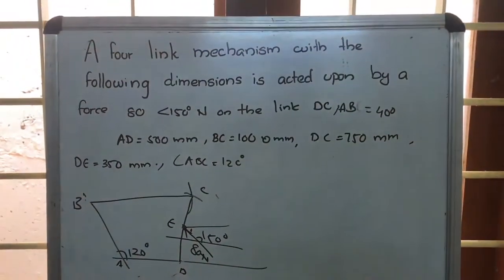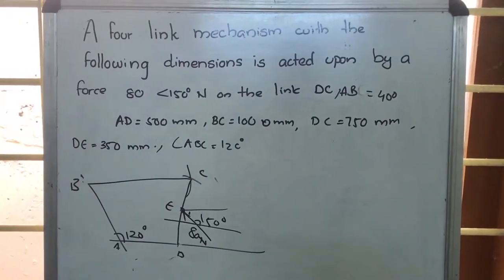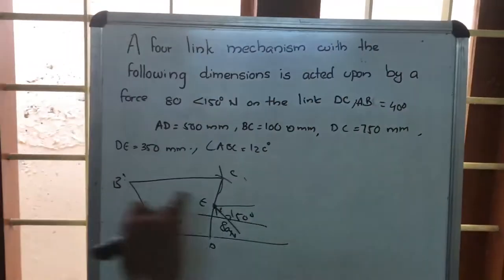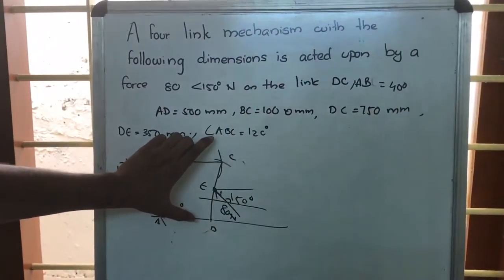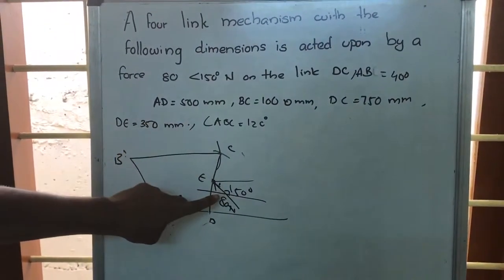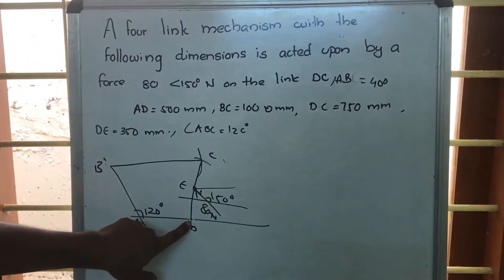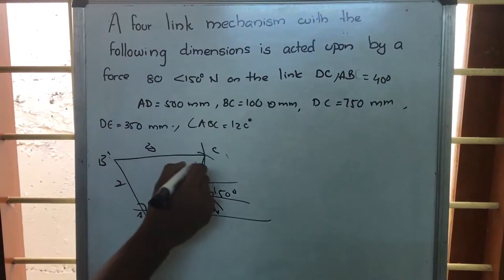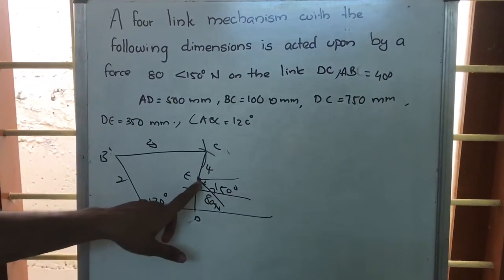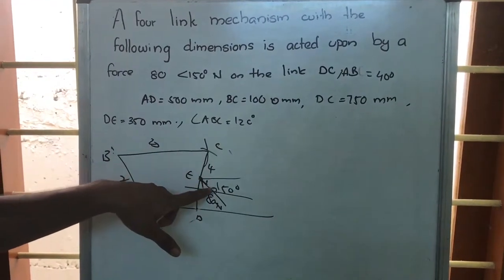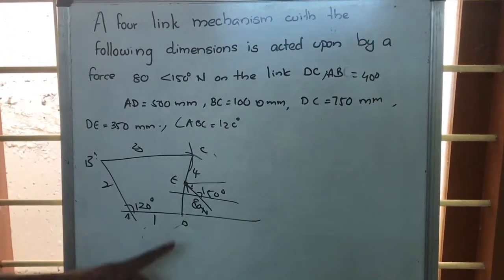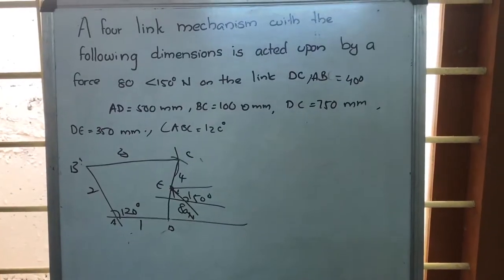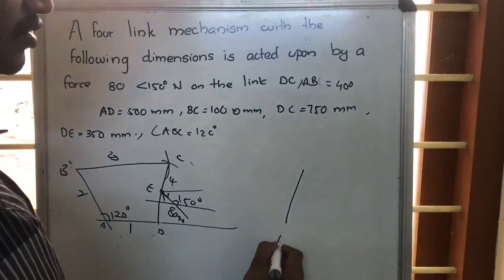Analyzing the mechanism: BC is a two-force member, and the force will be acting along BC itself — that will be its line of action. DC is the link with the non-force, and it is a three-force member. Let us name this link 1, link 2, link 3, and link 4. Link 1 will exert a force on 4, and link 3 will also exert a force on 4. This makes DC a three-force member because there is also an external force of 80 Newton.